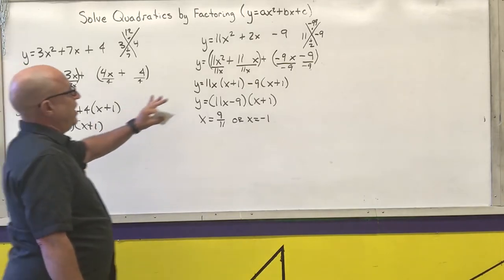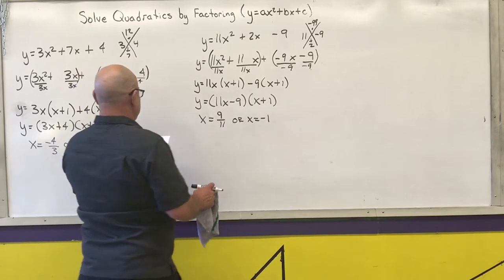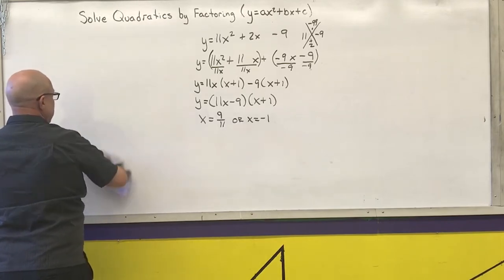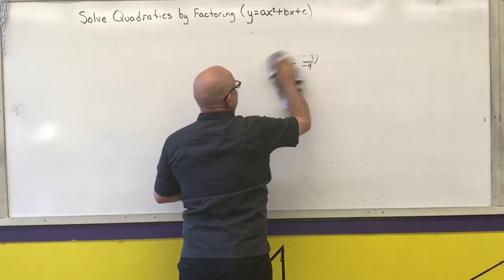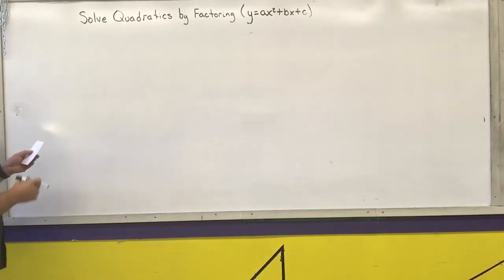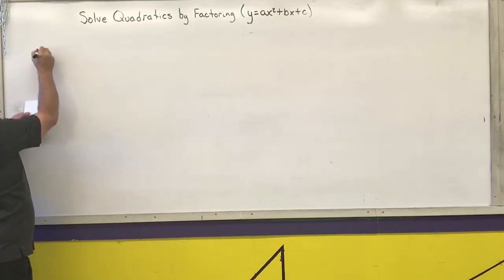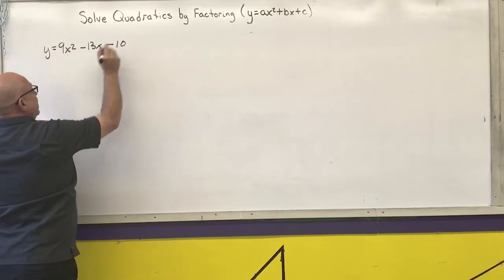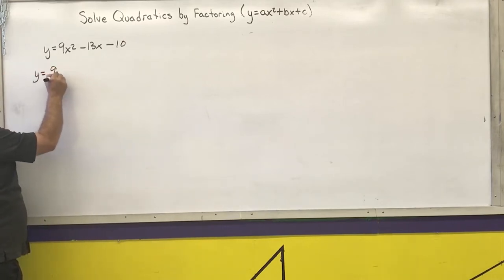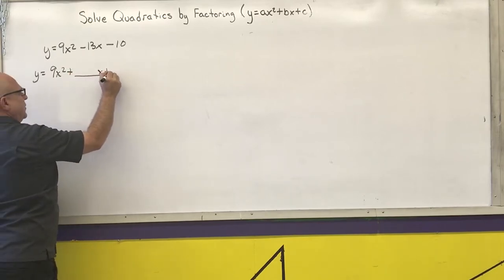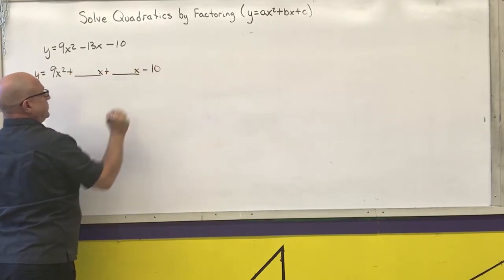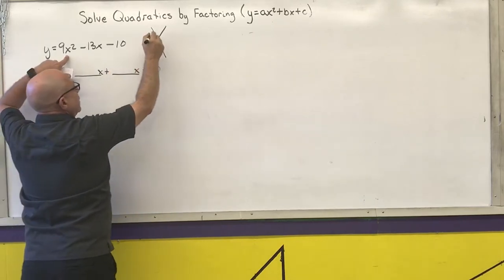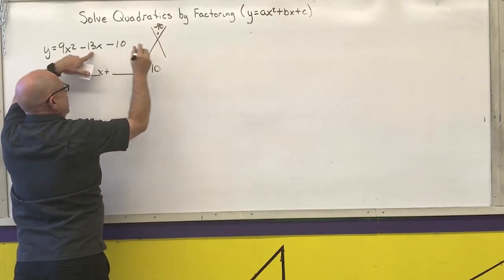Those first four examples all had pretty straightforward splits. The next examples have splits that are not necessarily as straightforward. Next example: y equals 9x squared minus 13x minus 10. So the setup is 9x squared plus blank x plus blank x minus 10. I need two numbers that multiply to negative 90 that add to negative 13.